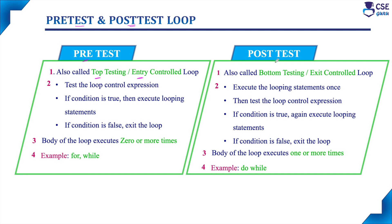In a post-test loop, the body of the loop executes once by default, and after executing, the condition is evaluated at the bottom of the loop. If the loop control expression evaluates to true, the body executes one more time and the process continues. Since the condition is tested at the bottom, the post-test loop is also called a bottom testing loop and an exit controlled loop — when the expression evaluates to false, the loop exits.